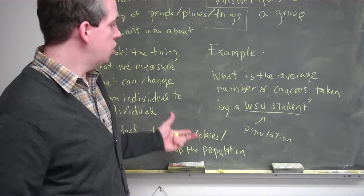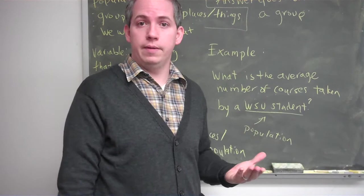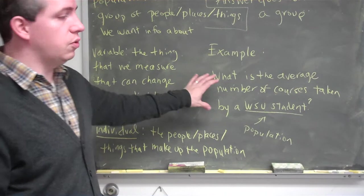Variables don't always have to be numeric. A variable could also be something that's not numeric, like color — what color is your hair, what color are your eyes. There's still a variable; it changes from individual to individual. Each time I change the question, I change the population, the individuals, and the variable.